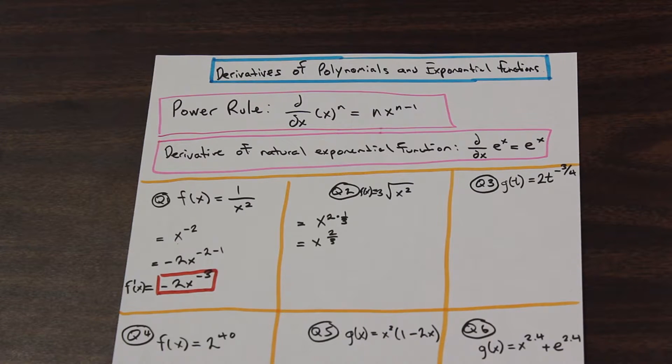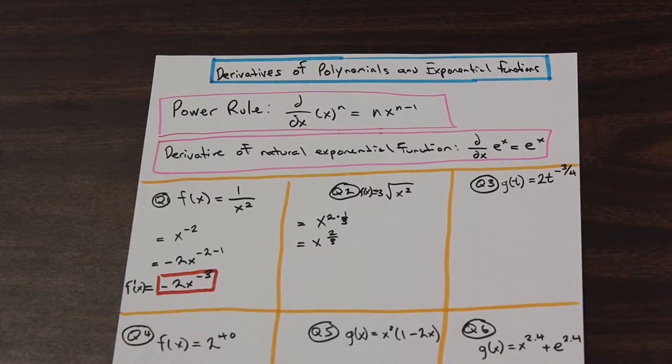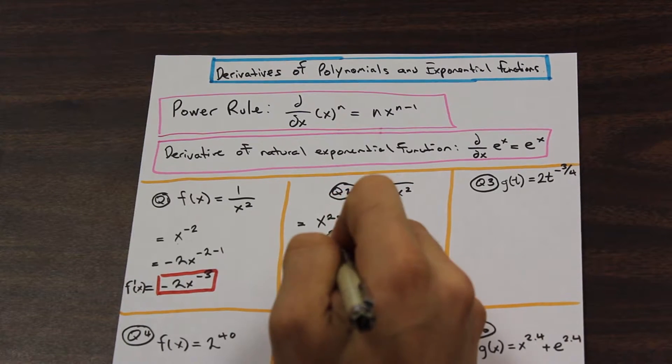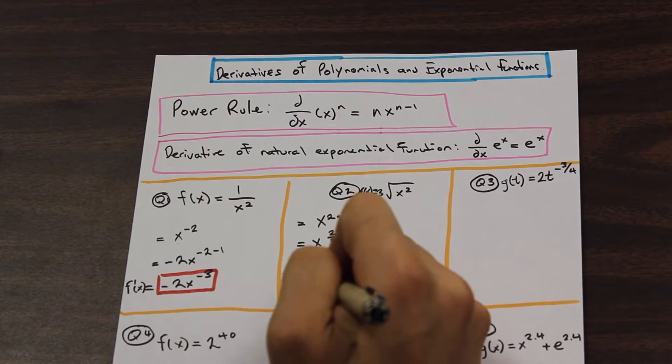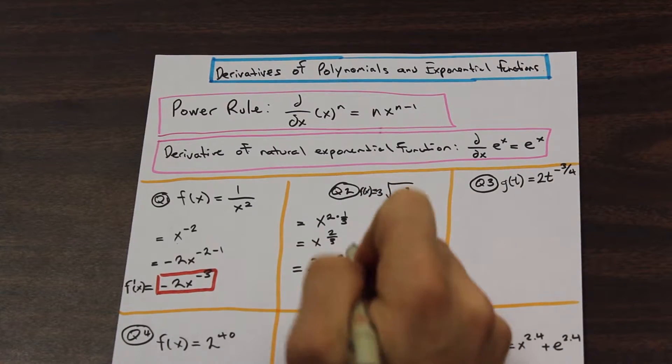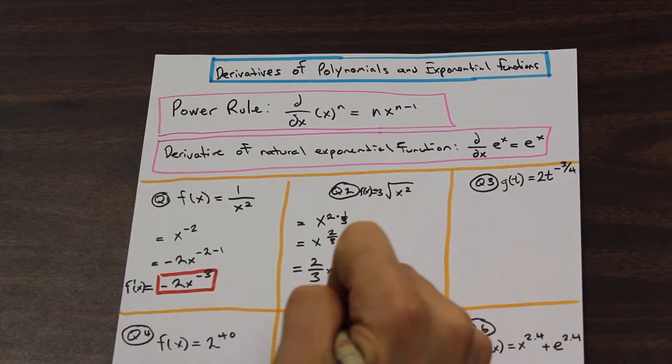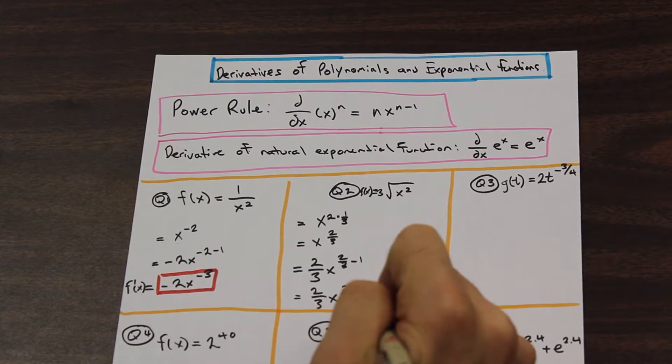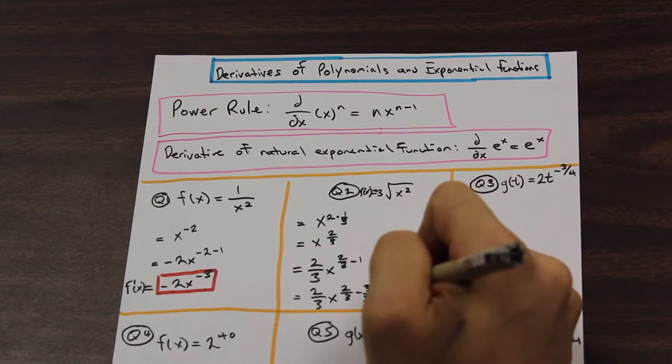And how do we continue from there? Well, once again, we just apply the power rule. That's it. And let's go ahead and do that. So we have, moving this down to the front, we have 2 over 3 times x to the 2 over 3 minus 1. And that 1 can become 2 over 3 minus 3 over 3. That's to the power of.